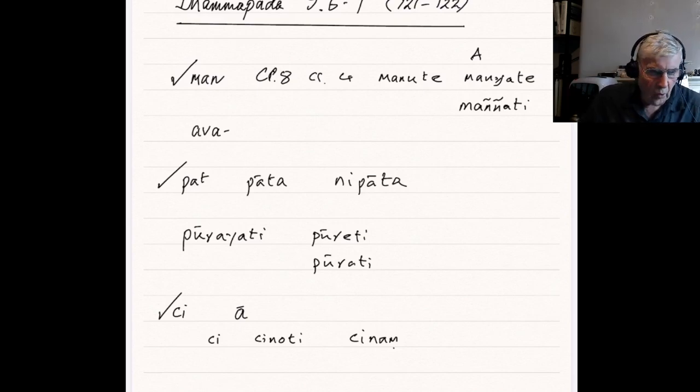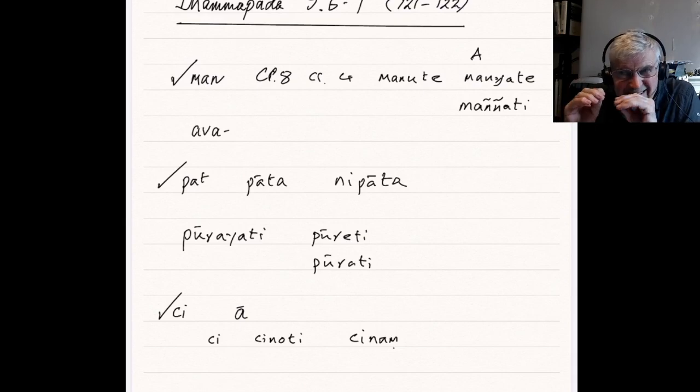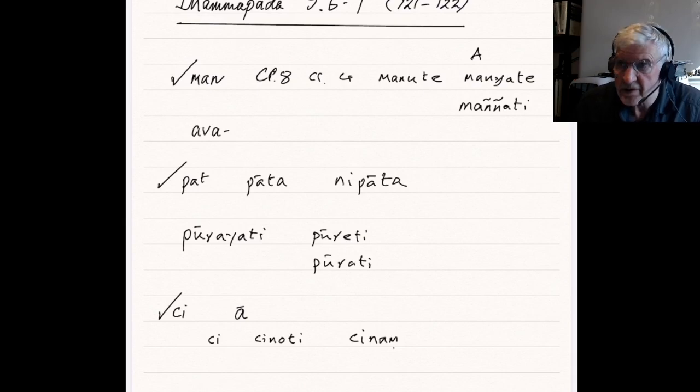So, the balo, the foolish person, purati papassa, will become filled to the brim with evil. Tokam, tokampi acinam. Even if he only accumulates it, little by little. Sooner or later, like the water dripping into the pot, the fool will fill him, become filled with evil. Acinam. Heaping it up, tokam, tokampi. Even if only, little by little.